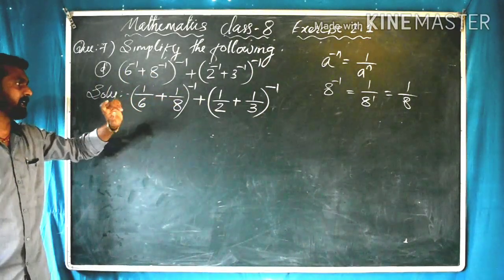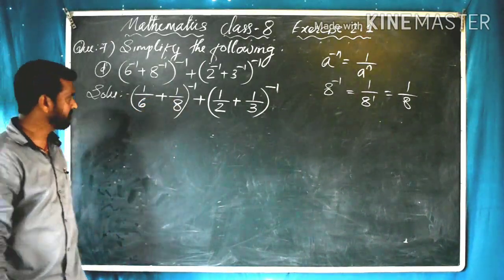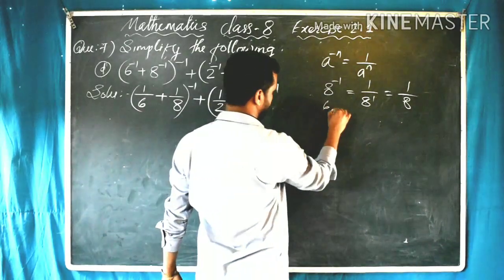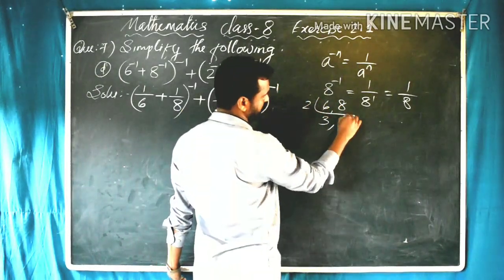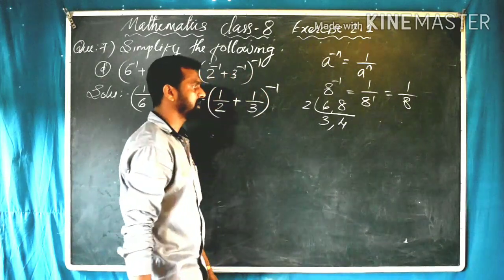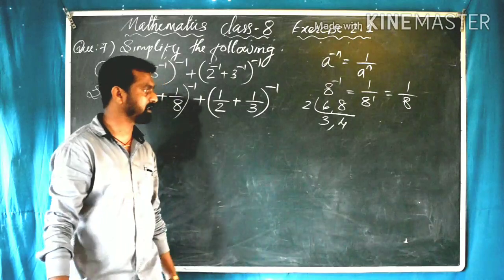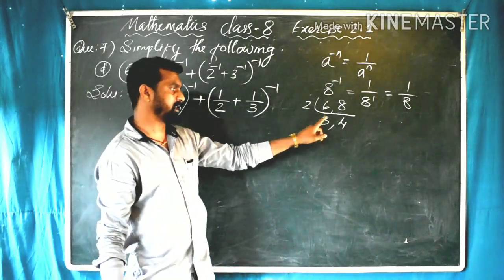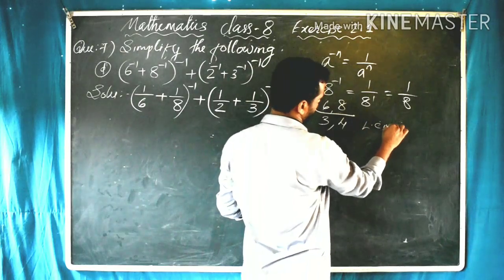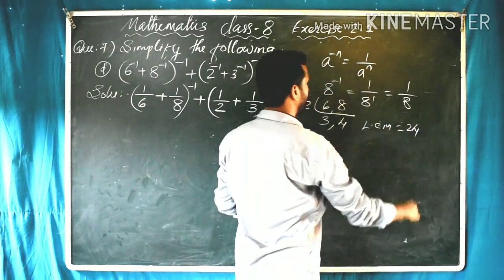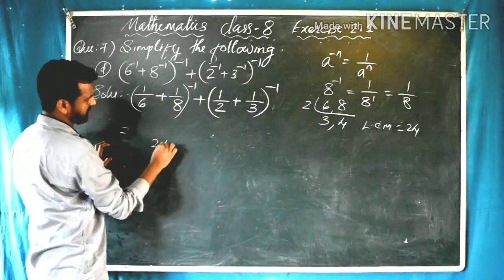Now we have (1/6 + 1/8) raised to minus 1 plus (1/2 + 1/3) raised to minus 1. For 1/6 + 1/8, we take the LCM of 6 and 8. Dividing by 2 gives 3 and 4; these have no common factor, so we multiply: 2 × 3 × 4 = 24. The LCM is 24, which goes in the denominator.